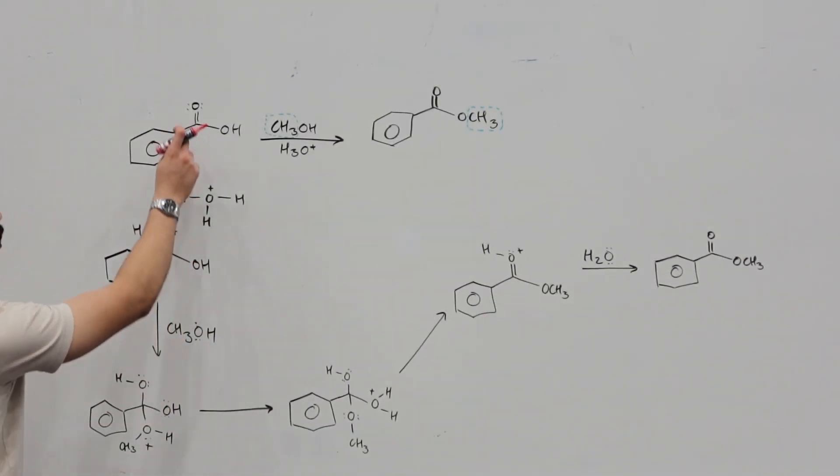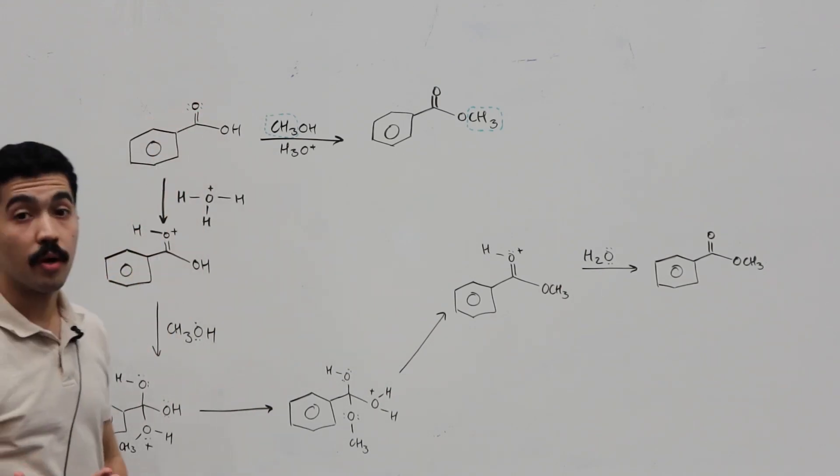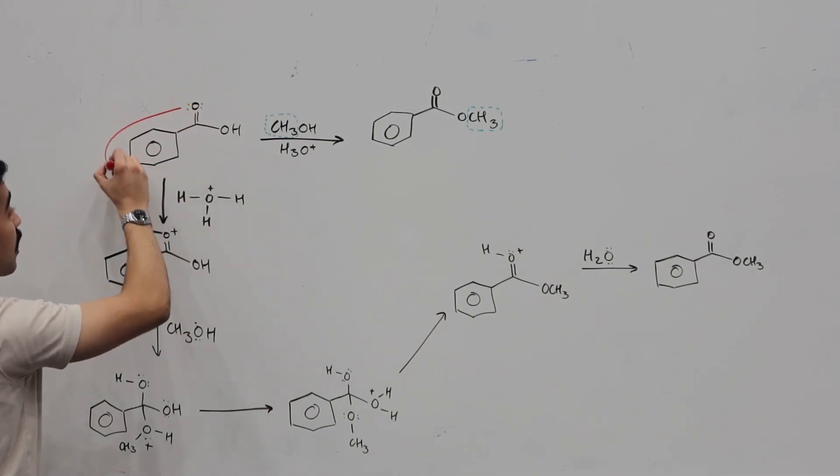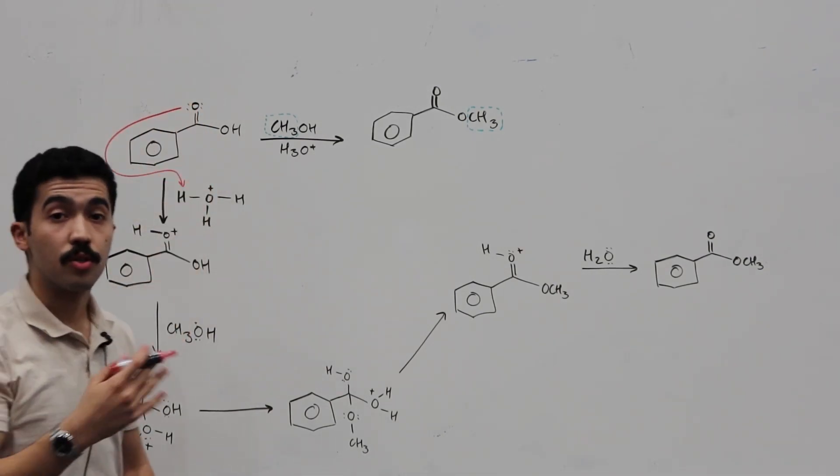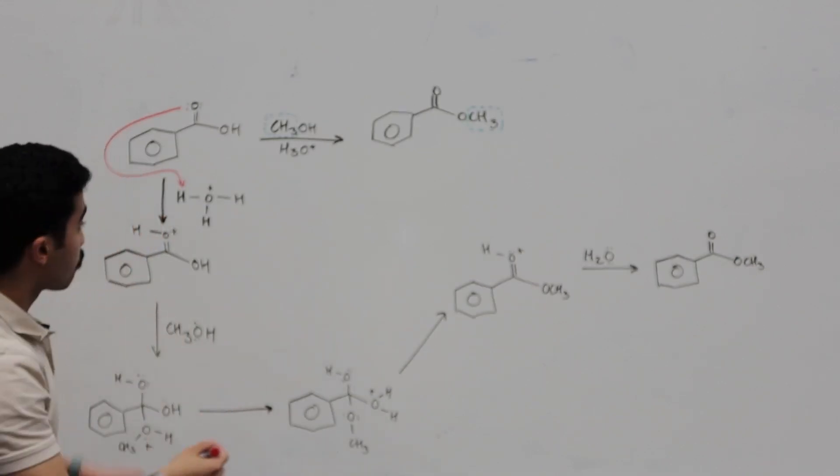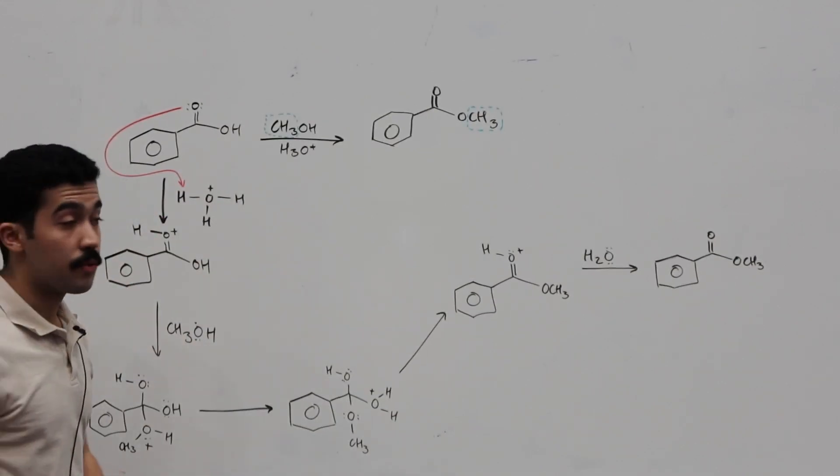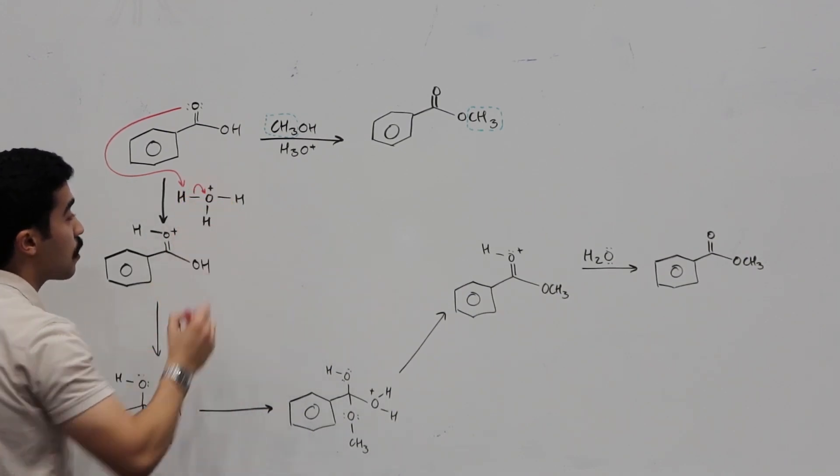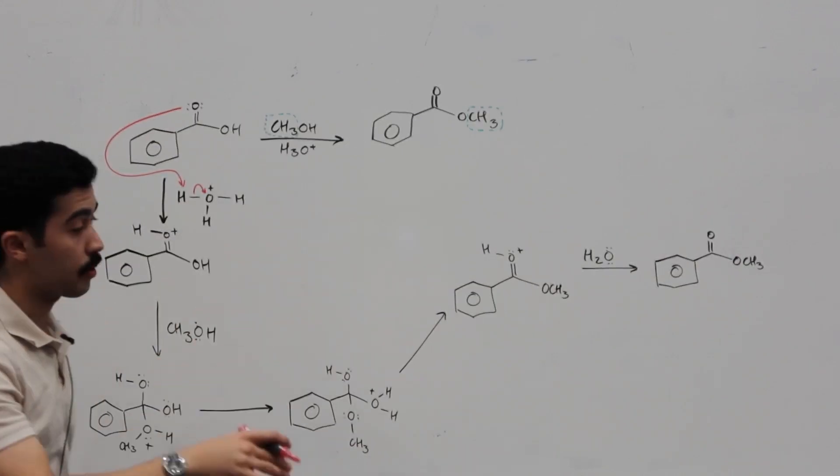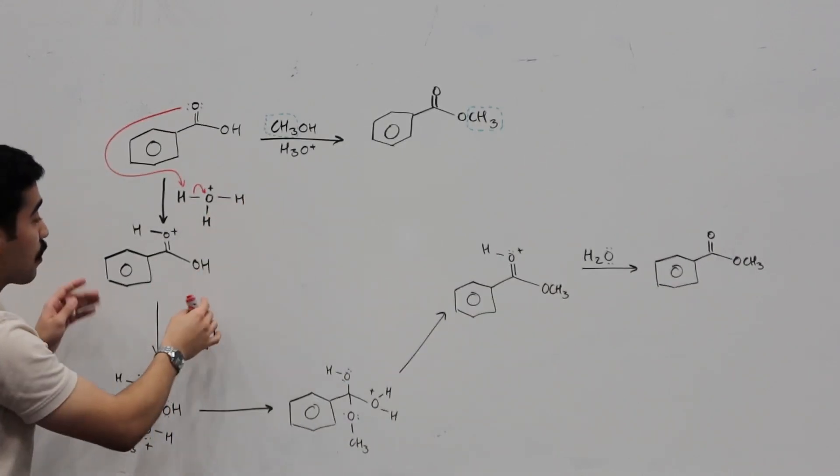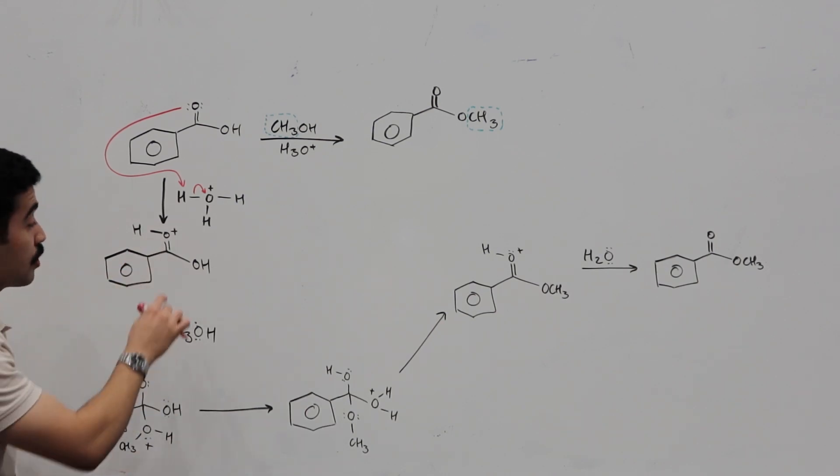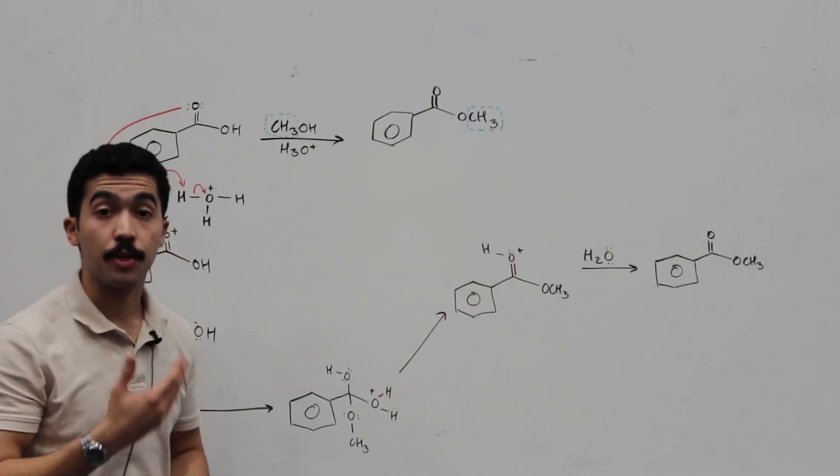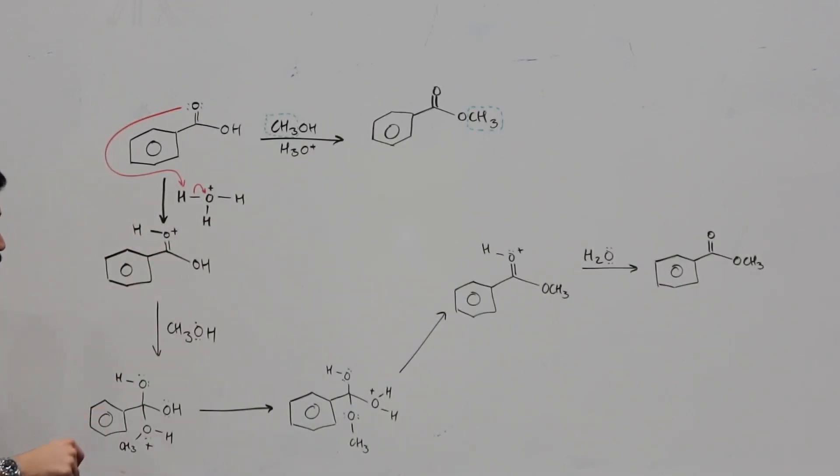So, this mechanism begins by, remember, on our carbonyl here, we're going to have a lone pair of electrons on the oxygen. What those will do is they will go ahead and attack our acid in solution, our H3O+, it's a donor of H+. Pick any one of these hydrogens, and once you remove one of those hydrogens, these electrons will collapse towards the oxygen, and you form H2O. Now, what we end up with is a protonated carbonyl group. So, C double bond OH, where oxygen, remember, if oxygen has three bonds, it's going to have a charge of plus.